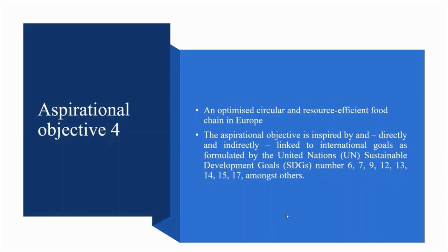Aspirational Objective 4: an optimized circular and resource-efficient food chain in Europe. This is linked to SDG 6 Clean Water and Sanitation, SDG 7 Affordable and Clean Energy, SDG 9 Industry Innovation and Infrastructure, SDG 12 Sustainable Production and Consumption, SDG 13 Climate Action, SDG 14 Marine Protection, SDG 15 Biodiversity, and SDG 17 Partnerships, among others.